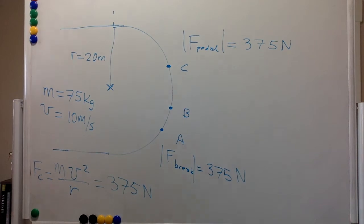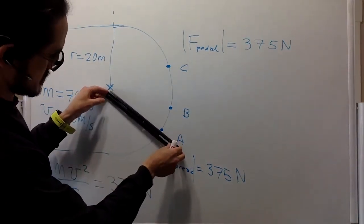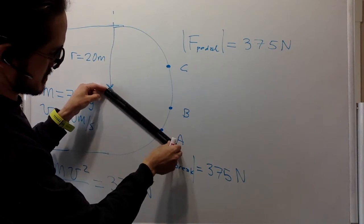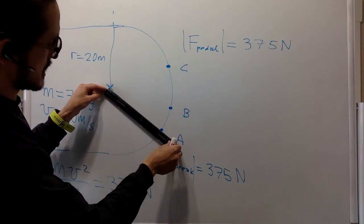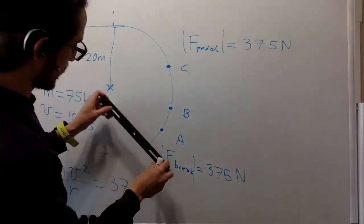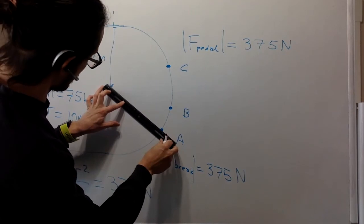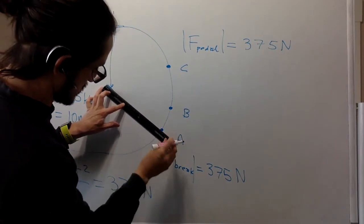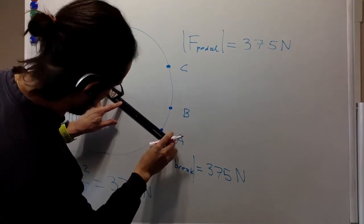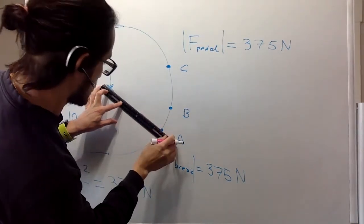So let's draw the forces. I have my ruler over here. So each 100 newtons is going to be one inch. And so I can draw this one first towards the center, and it's going to be 3.75 inches. One, two, three point 75. More or less like that.